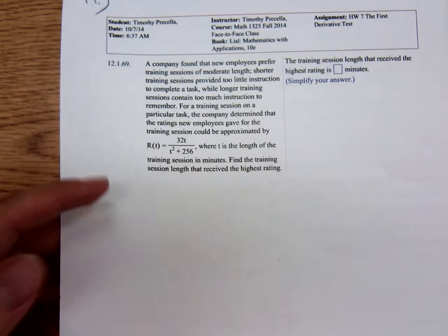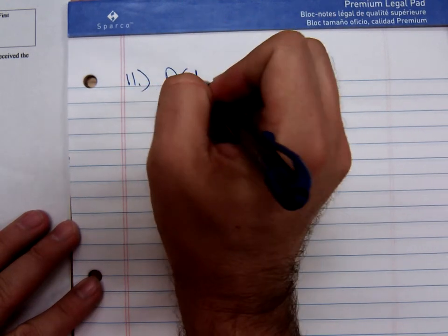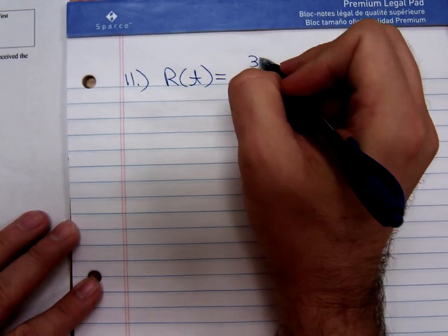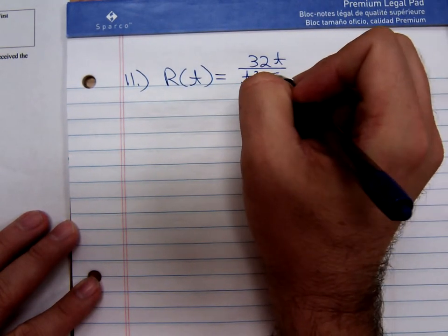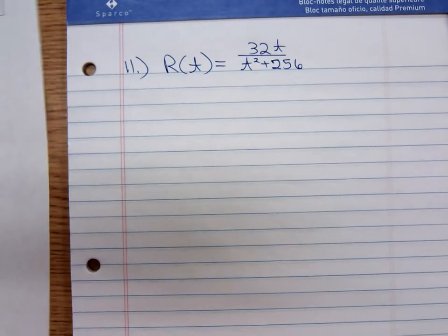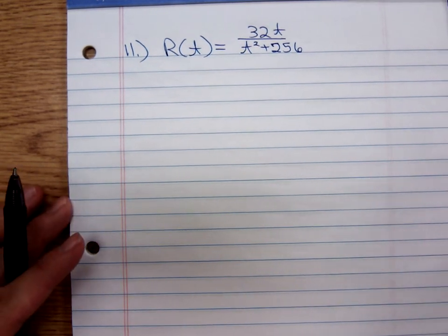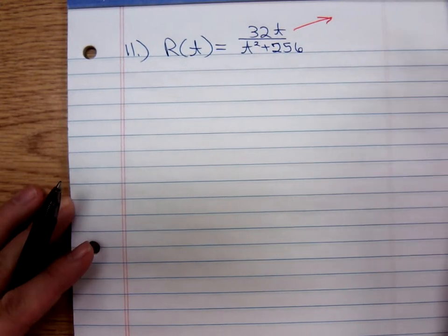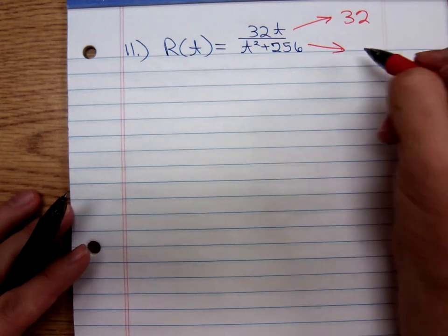I think I'm going to, if it's okay with y'all, just rewrite the problem here. And while I'm recopying it, y'all tell me what do you think? We're gonna have to find the derivative, so which derivative rule will we use? Quotient rule. Okay, if we're using the quotient rule we need to know the derivative of the numerator and the derivative of the denominator. What's the derivative of the numerator? That's just 32. I agree. The derivative of the denominator? Just 2t.